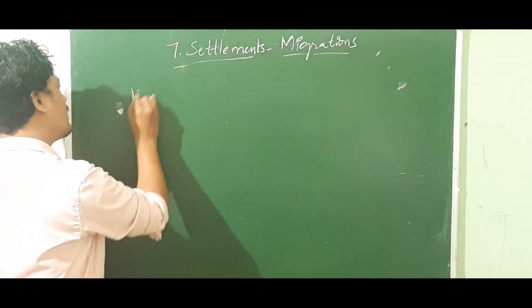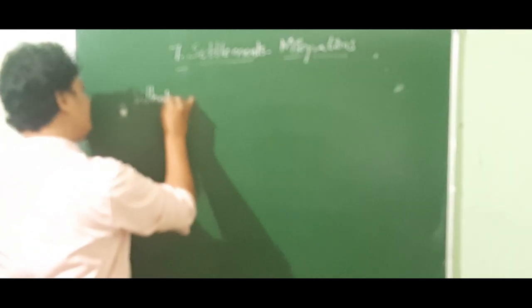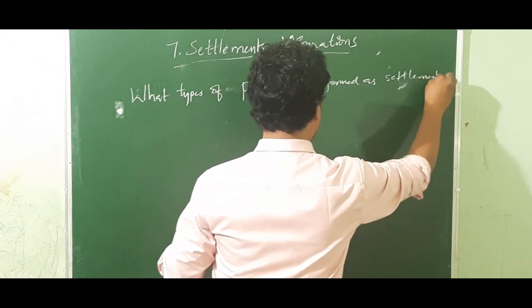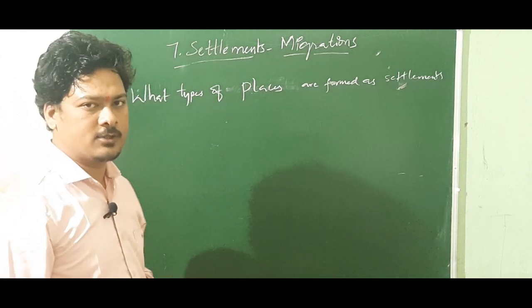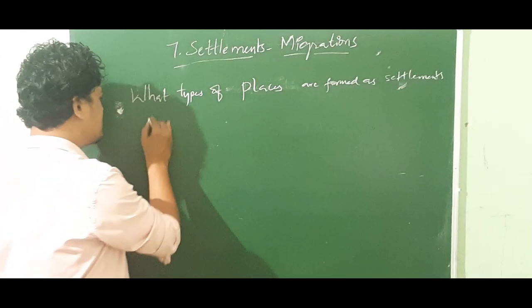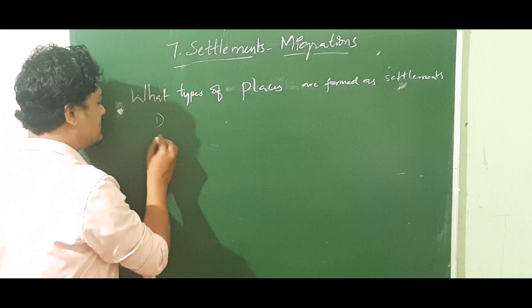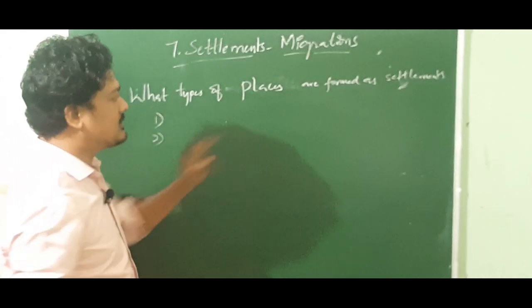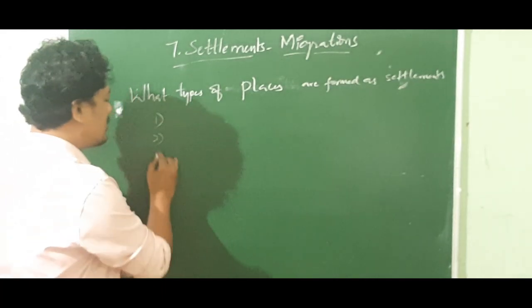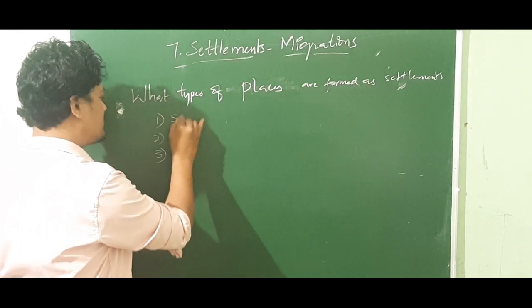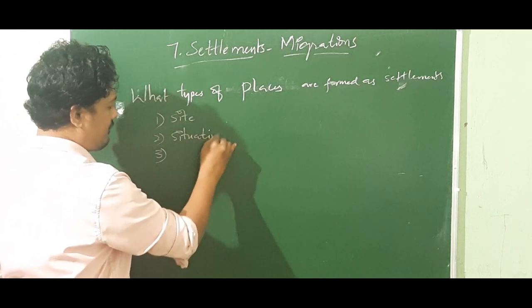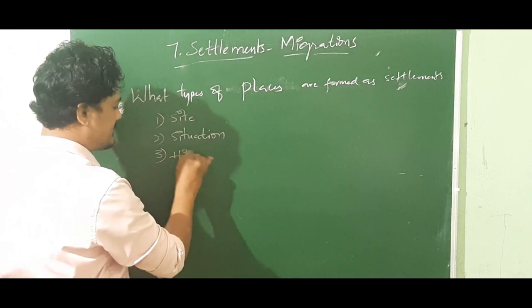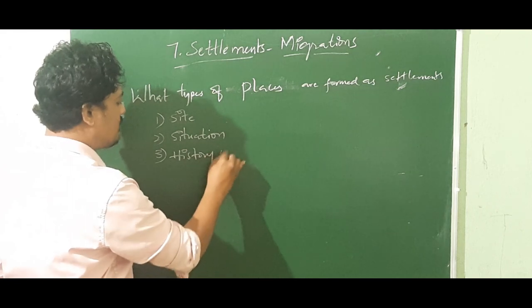Now the next topic: what type of places are formed as settlements? There are three factors: site, situation, and history of the place. These are the three most important things that attract people to live in that place.